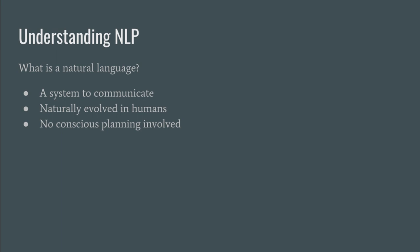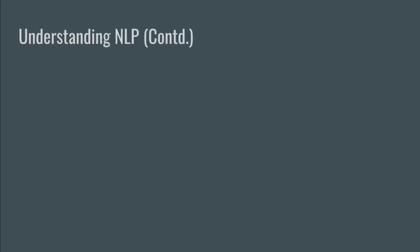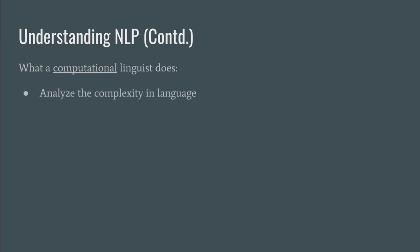When you look at this set of languages — starting from English, French, Arabic, Japanese, Russian, and so on — you see that there is a lot of complexity involved. This complexity is interesting to linguists as they study language and gather a ton of insights into various spheres of life, such as how the mind functions, how people evolved, how certain sounds are rare while others aren't. But what a computational linguist is interested in is to get this very complex language analyzed, processed, and finally understood by computers.